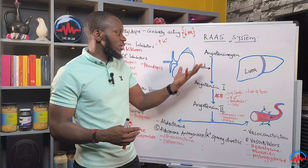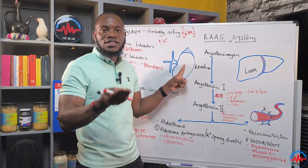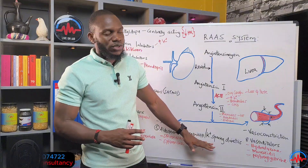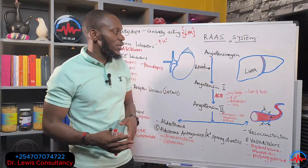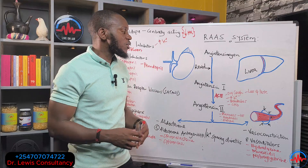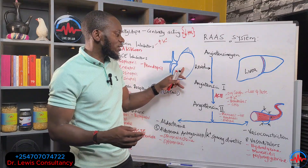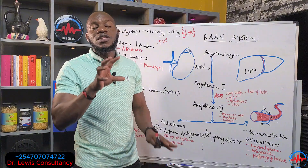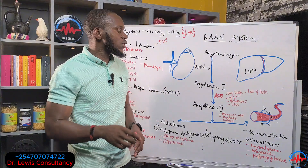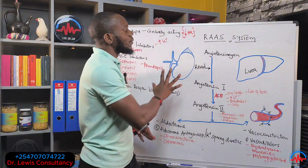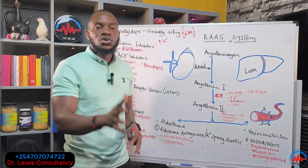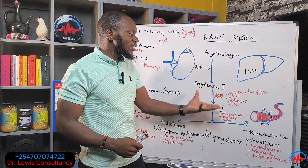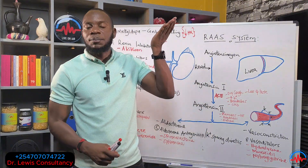When blood pressure goes up to a certain level, the kidneys sense the increase and shut down this system so you don't go into excess high blood pressure, which could cause rupturing of blood vessels, strokes, heart attacks, and kidney failure. This is how it regulates itself. Drugs that manage hypertension — because they don't treat, they manage — come and block this system so the end result is not increasing blood pressure but dropping it, because we've already activated this system and blood pressure is already up.